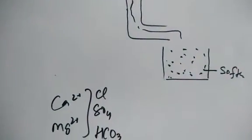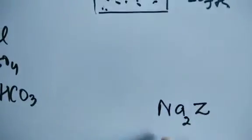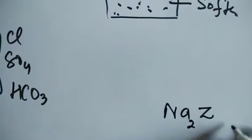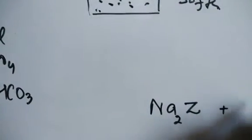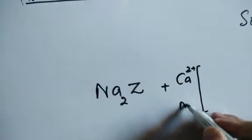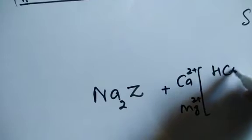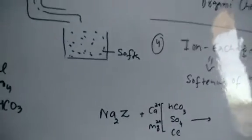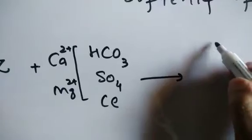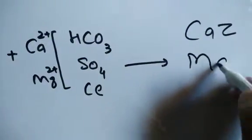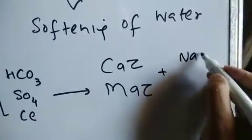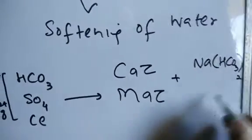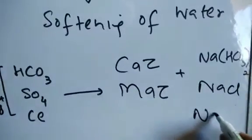We can express this as a reaction: sodium zeolite (Na₂Z, sodium aluminium silicate) is treated with hard water containing calcium and magnesium salts. The calcium and magnesium ions occupy the zeolite sites, producing calcium zeolite, magnesium zeolite, plus sodium bicarbonate, sodium chloride, and sodium sulfate in the effluent water.